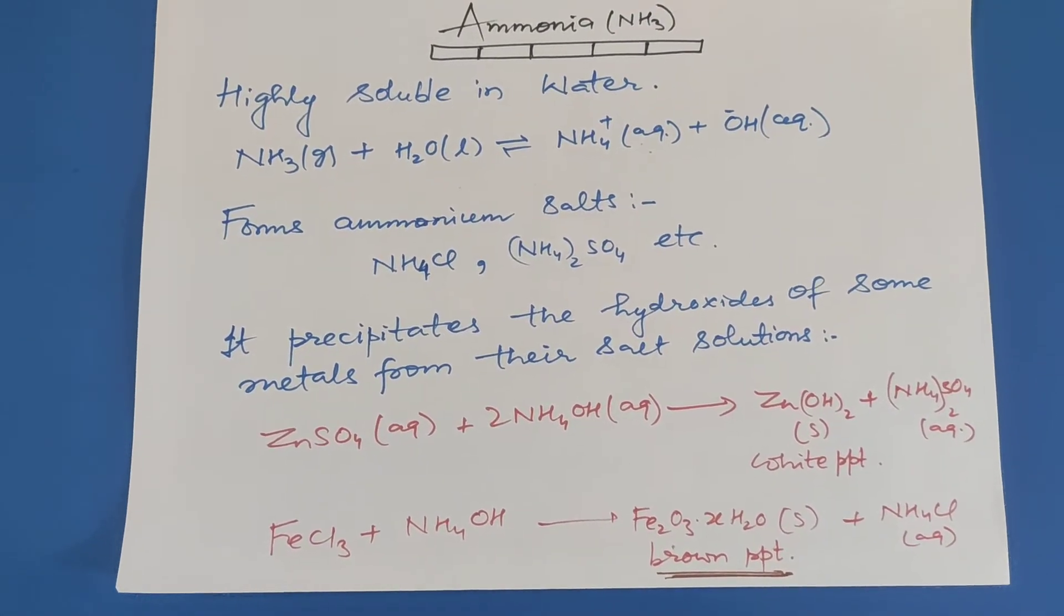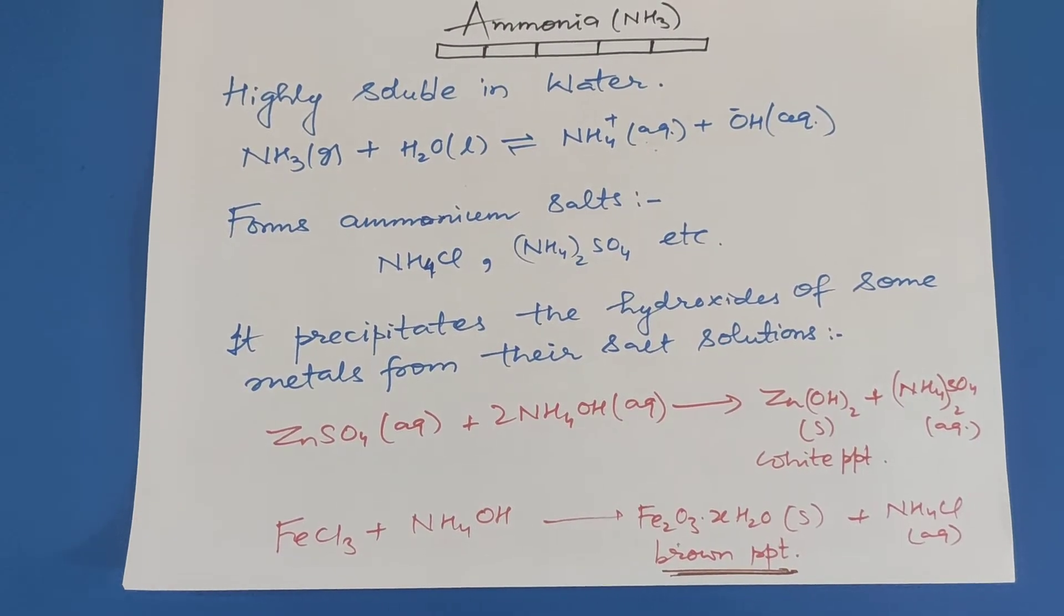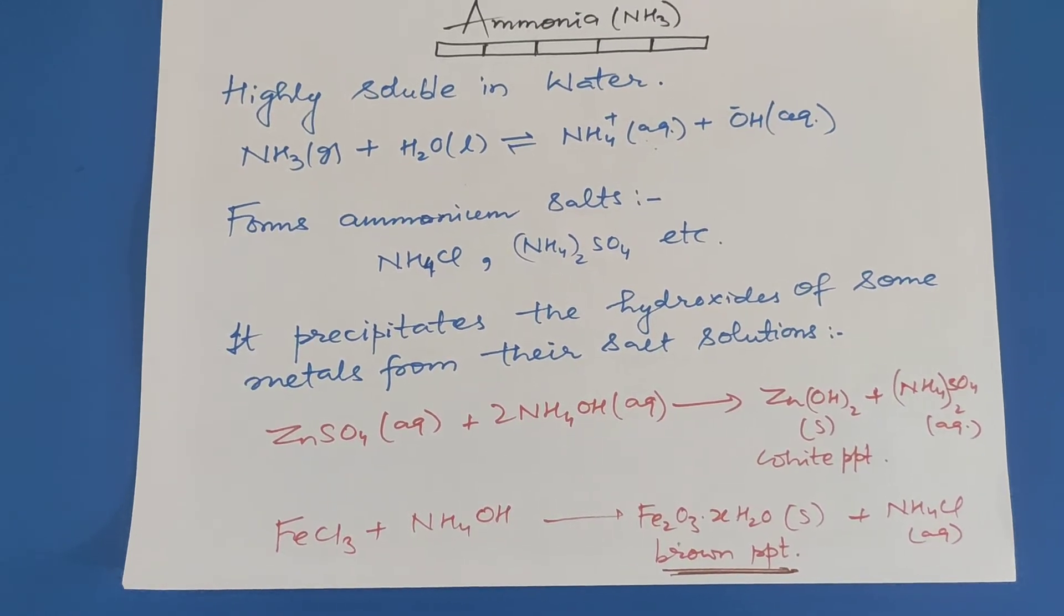Iron chloride plus ammonium hydroxide gives Fe2O3·xH2O, that is brown precipitate, plus ammonium chloride aqueous.